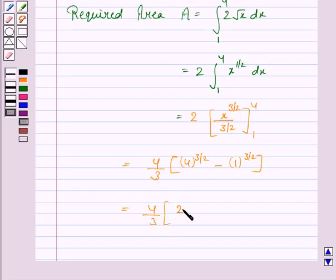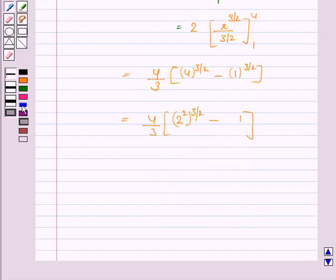We have (4/3) times [4^(3/2) - 1]. Now 4 can be written as 2², so 4^(3/2) = 2³ = 8, and 1^(3/2) = 1. This becomes 2³ - 1 = 8 - 1 = 7.